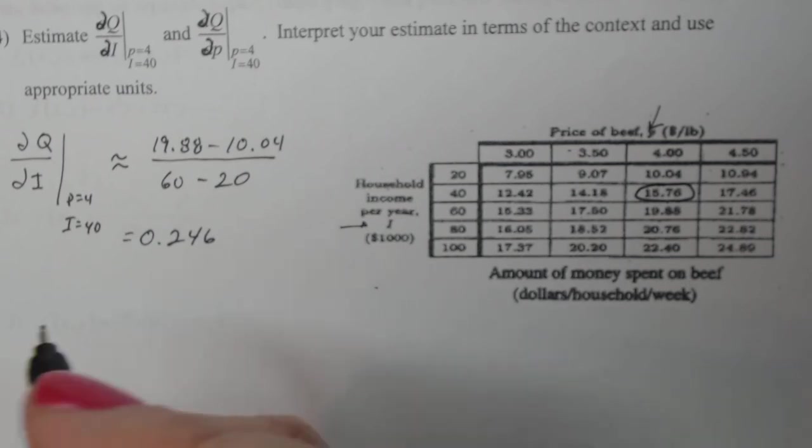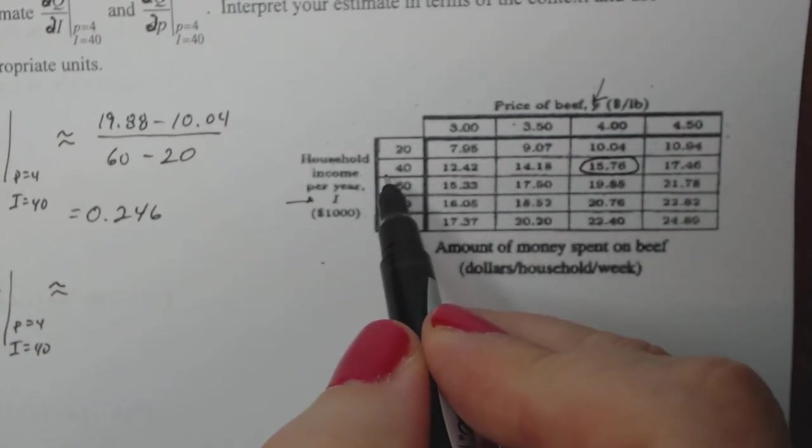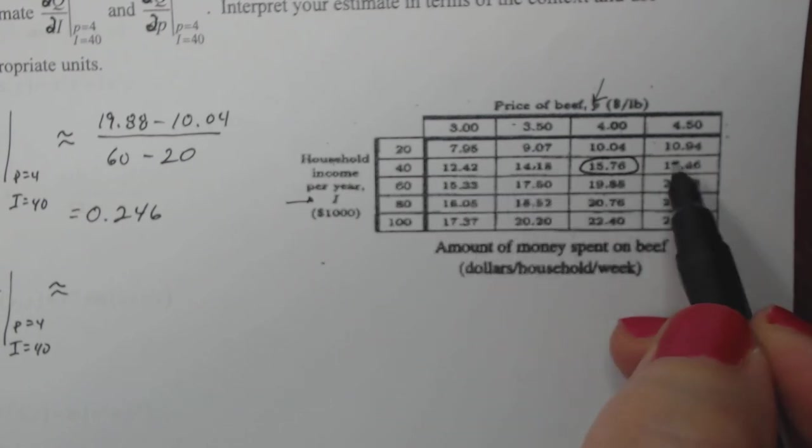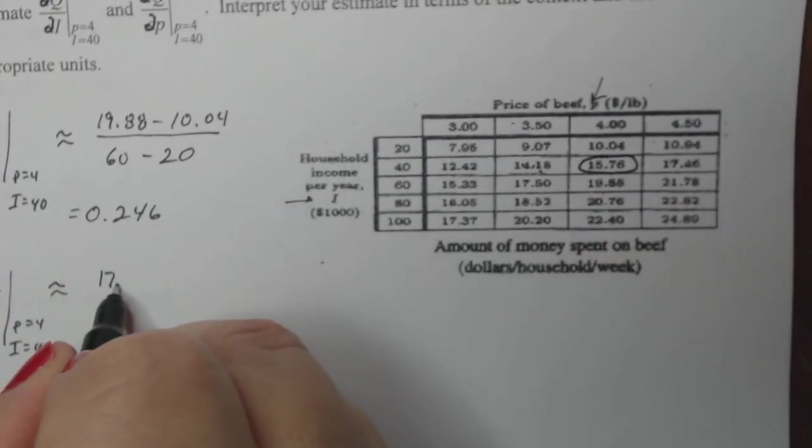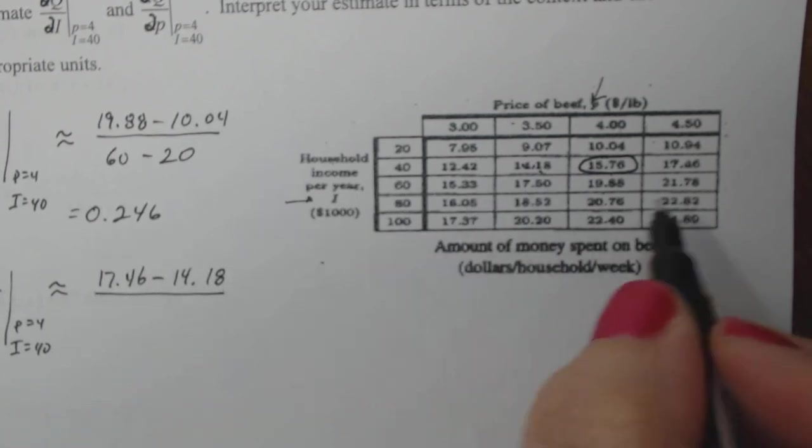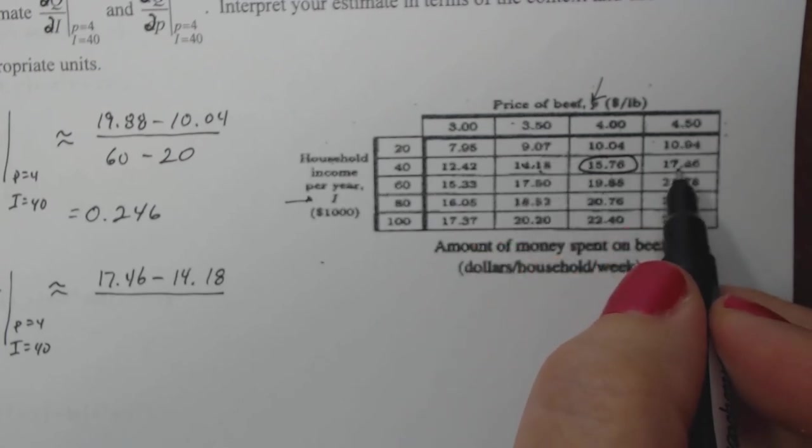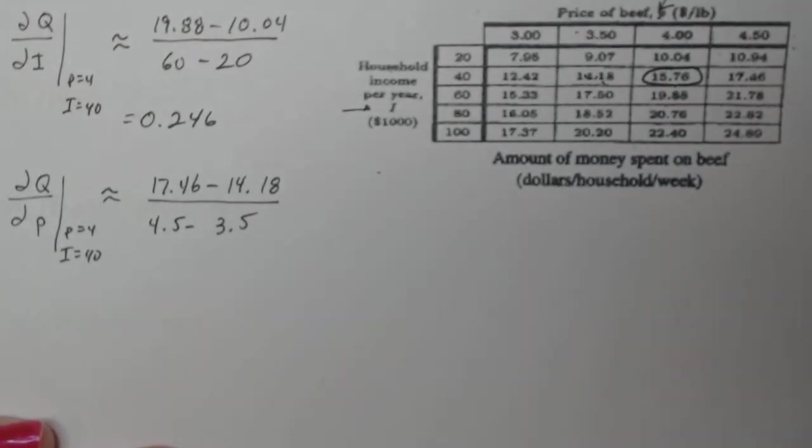Now let's try dQ dP from the same reference point P equal four, I equal 40. So now when I look at the chart, I want to keep I fixed and then look at the change in P around that point. So if I use a central difference quotient again, my P changes from 17.46 minus 14.18. Those numbers are terrible to read. And then I think about, okay, now how did the P change accordingly? At 17.46, my P was 4.5, and at 14.18, my P was at 3.5. So that's a pretty good estimate.